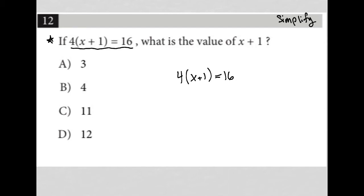The question says, if 4 times x+1 is equal to 16, what is the value of x+1? The absolute easiest way to simplify and get the answer would be to divide by 4 on both sides. In doing so, the 4s would cancel out, you'd be left with x+1, and that would equal 16 divided by 4, which is 4. So the answer would be 4.